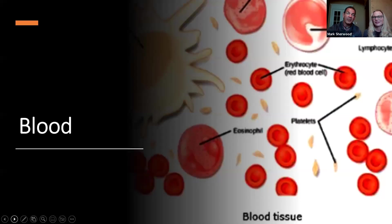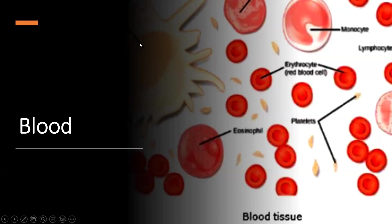Now we move from adipose, loose, and dense connective tissue to this thing called blood. A lot of people don't see blood as a connective tissue, but it really is. Blood is considered a connective tissue for two basic reasons: embryologically, it has the same origin as other connective tissue types, and blood connects the body systems together, bringing needed oxygen, nutrients, hormones, and other signaling molecules, as well as removing waste. In circulating blood, two different types of cells are found — the red blood cells and the white blood cells.